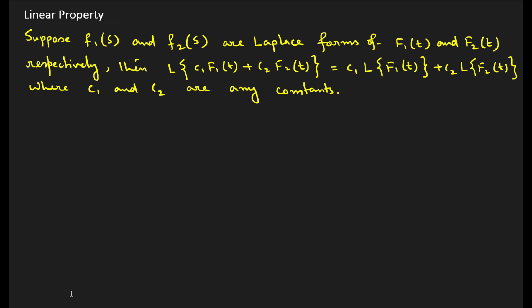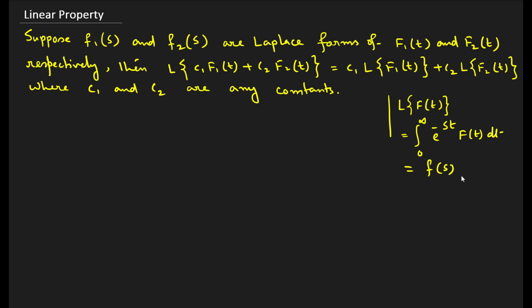Our first property is the linear property. Suppose F1(s) and F2(s) are the Laplace transforms of f1(t) and f2(t) respectively. The formula for L{f(t)} is the integral from 0 to infinity of e^(−st) f(t) dt, which we write as F(s). Here s is a parameter independent of t, so there is no direct relation between s and t. Since there are two different functions, f1(t) and f2(t), the Laplace transform of f1(t) is F1(s) and the Laplace transform of f2(t) is F2(s).